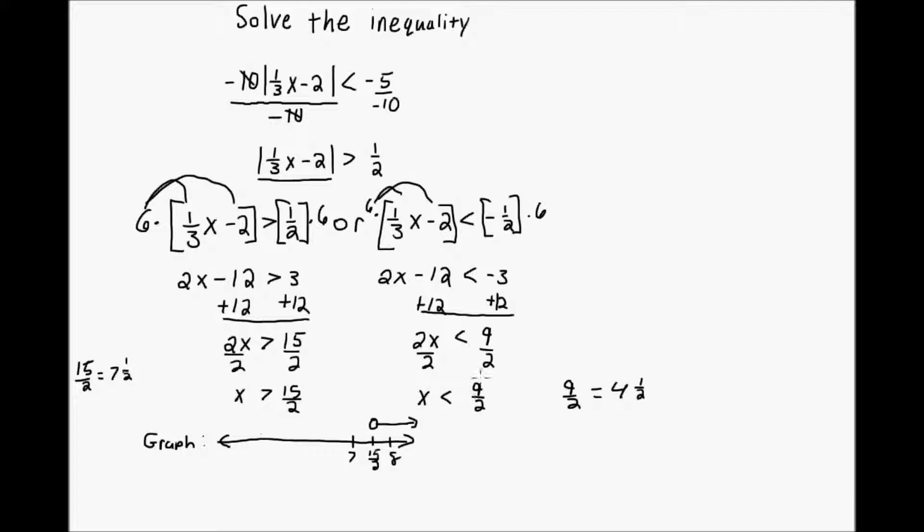Okay, and we also know that x is less than 9 over 2. So, that's 4 and 1 half. We'll say this is 6, 5, 4. Right here is 4 and 1 half, or 9 over 2. And we'll put an open circle. And the numbers less than 9 over 2 are in this direction.